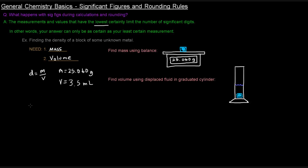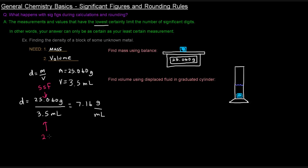The density equals mass over volume: 25.060 grams divided by 3.5 milliliters. If you punch this into your calculator, you'll get 7.16 grams per milliliter. However, 25.060 has five significant figures and 3.5 only has two. You're limited by the one with fewer significant figures, so your answer can only have two sig figs. Therefore, we round 7.16 to 7.2 grams per milliliter. Based on this density, you can then predict what the unknown metal might be.